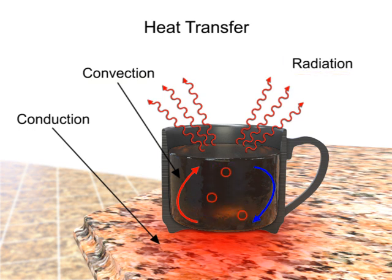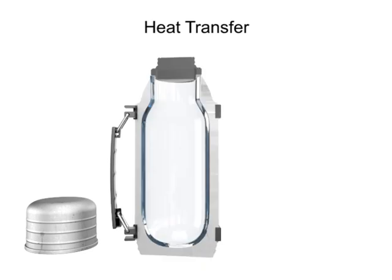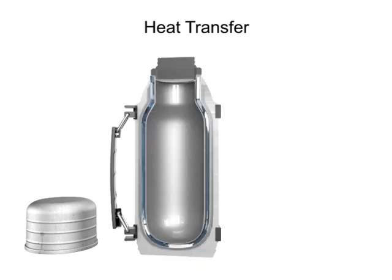One way to conserve the heat of a liquid and prevent heat transfer is to place it in a thermos. The use of a vacuum chamber with silvered surfaces along with low conductive materials can greatly improve the amount of heat or cold that is lost to the surrounding environment.